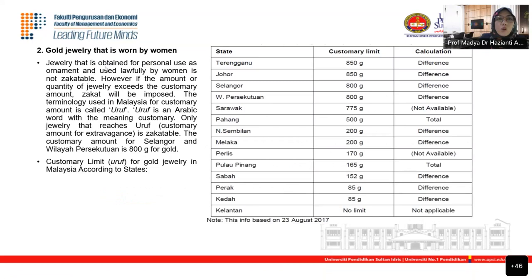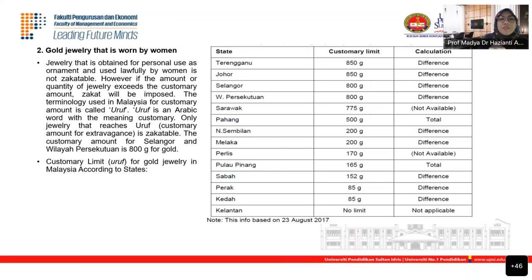For gold pawning via al-Rahn: gold pawned at al-Rahn is still considered full ownership of the pledger. The calculation is: total value of gold minus the loan amount minus safekeeping fees. Example: Norma pawns gold necklaces and bracelet totaling 30g at RM150/g (value RM4,500). She borrows 70% = RM3,150. Safekeeping fee is RM24/month, now on month 6 = RM144. Net amount: RM4,500 - RM3,150 - RM144 = RM1,206. This is combined with other gold-based assets. If this is her only asset, zakat = RM1,206 × 2.5% = RM30.